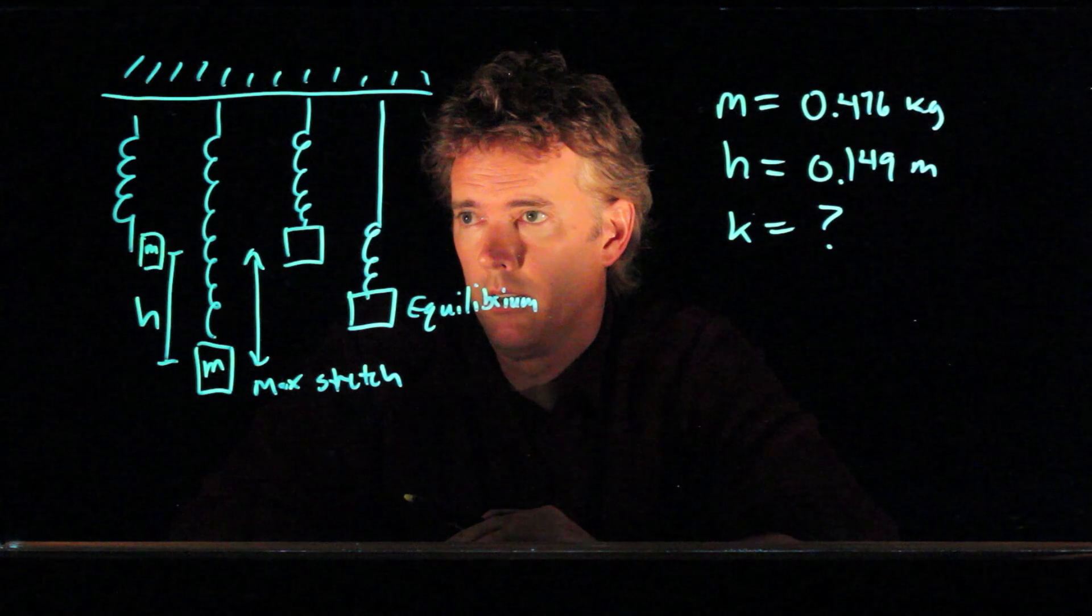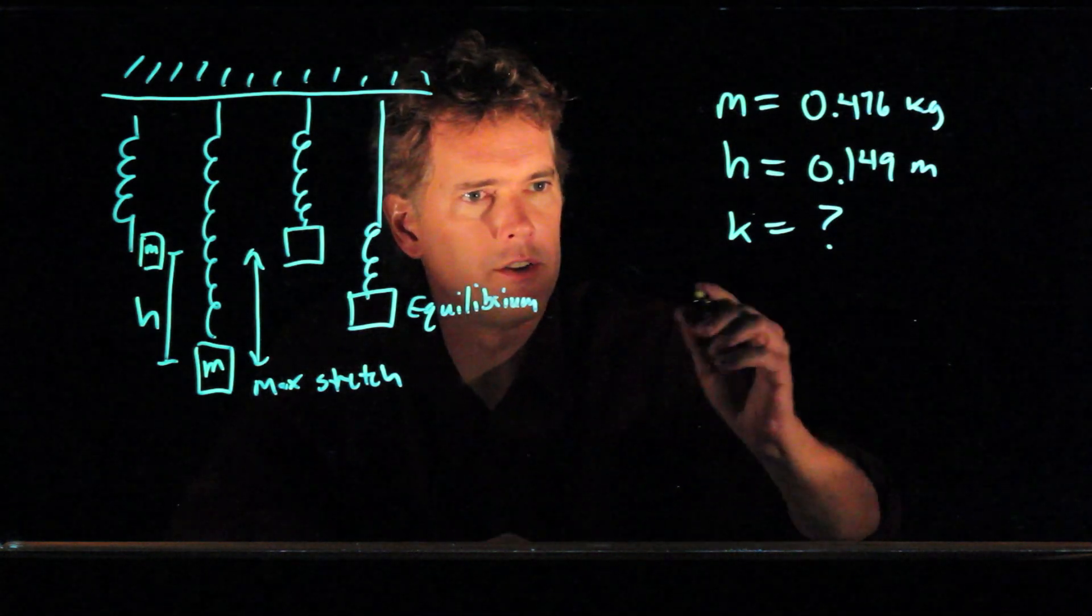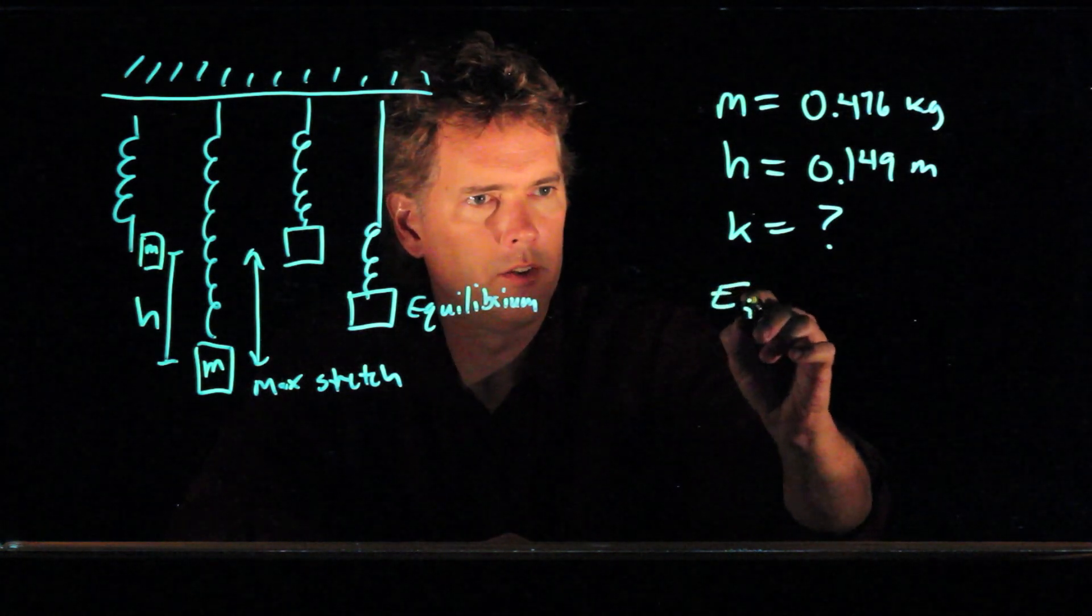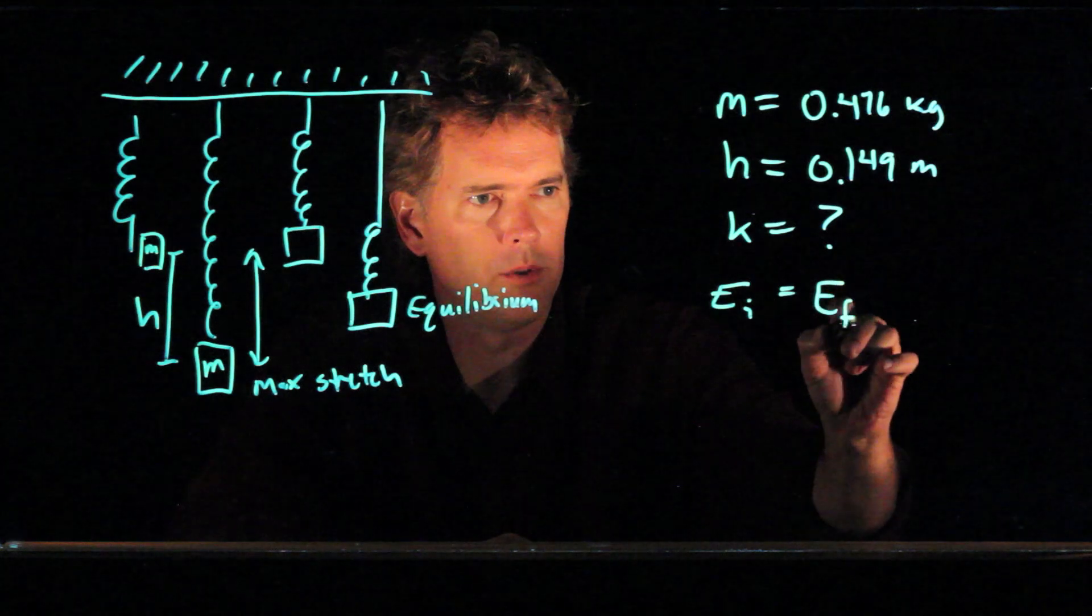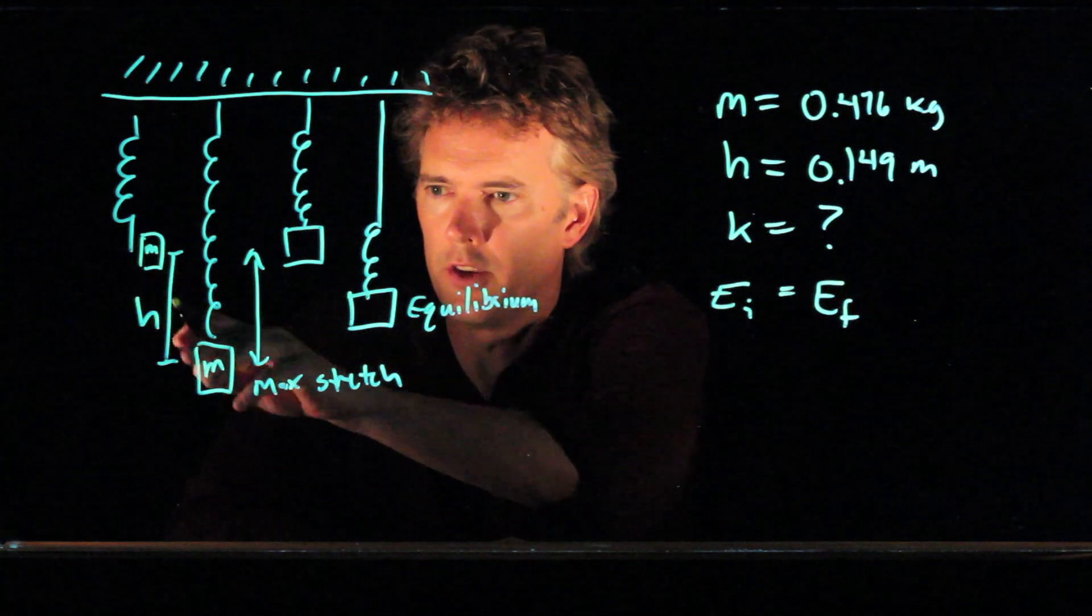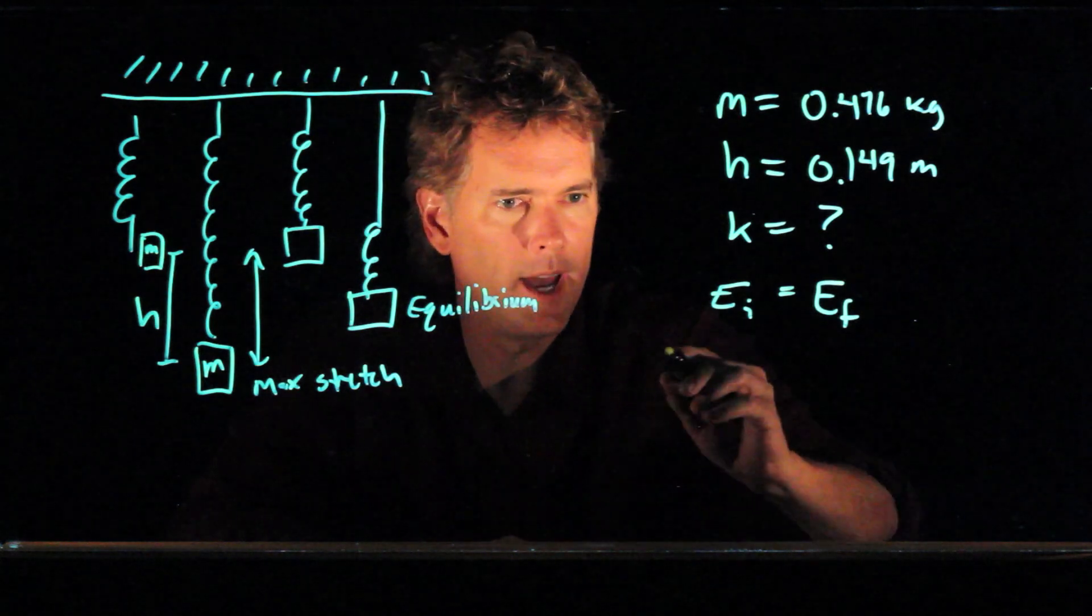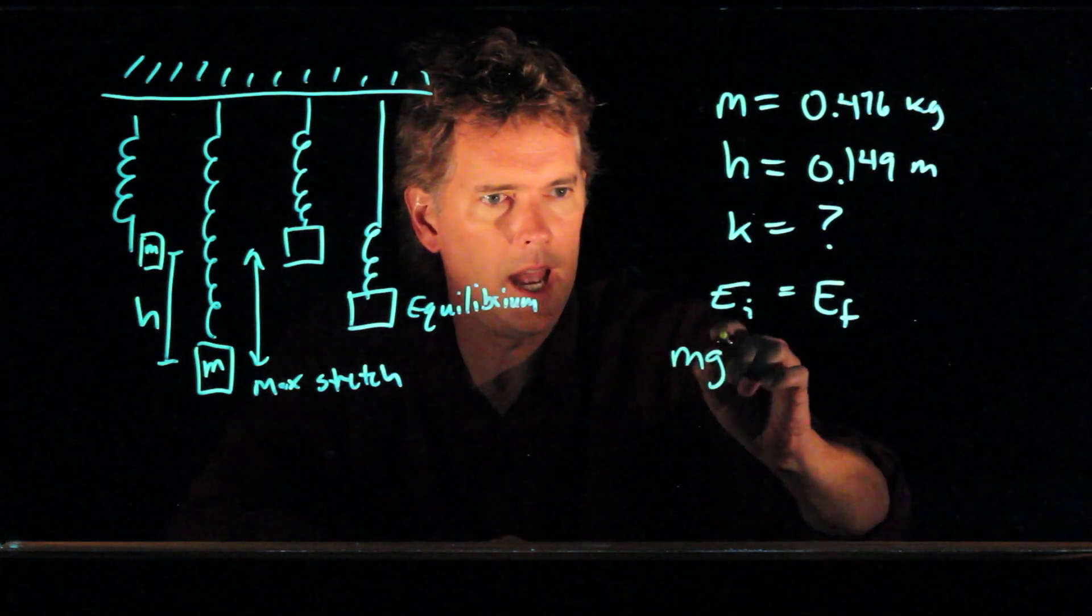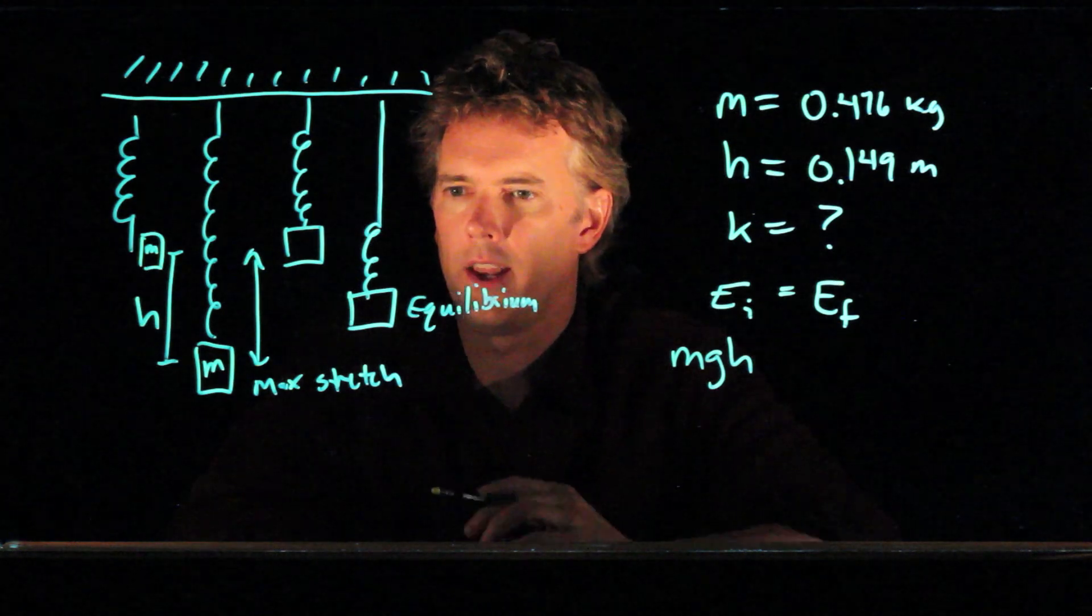Well, one way that we can do it is simply conservation of energy. The energy initially has to be equal to the energy in the final picture. If this is initial and that's the final, what do we have for initial? We have MGH. What do we have for final?